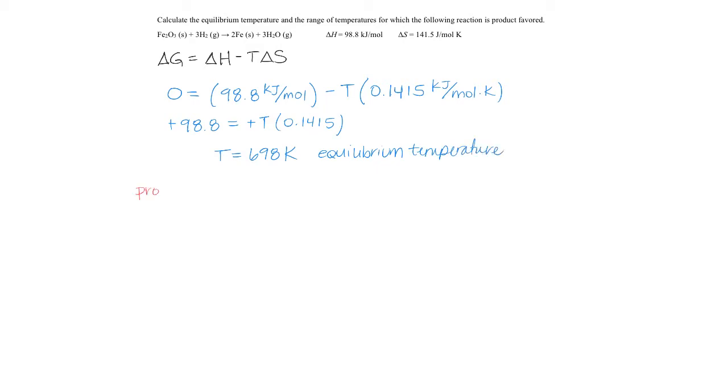A product favored reaction is a spontaneous reaction. And a spontaneous reaction will have delta G values less than 0. We know that when delta G is equal to 0, temperature is equal to 698 Kelvin. So let's look at what happens to G if T is less than 698 Kelvin, and when T is greater than 698 Kelvin.